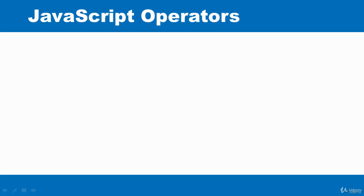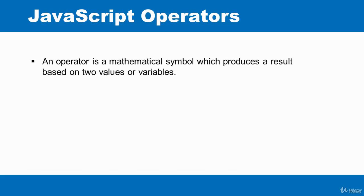An operator is a mathematical symbol which produces a result based on two values or variables. You should have already come across some of these operators. For example, the addition, multiplication, subtraction and division. These are all referred to as arithmetic operators.